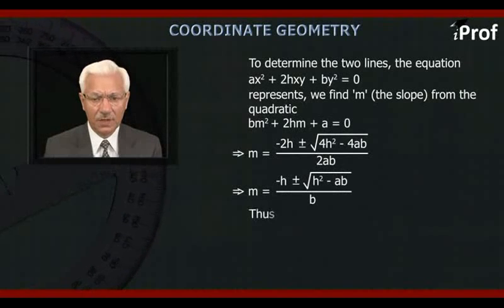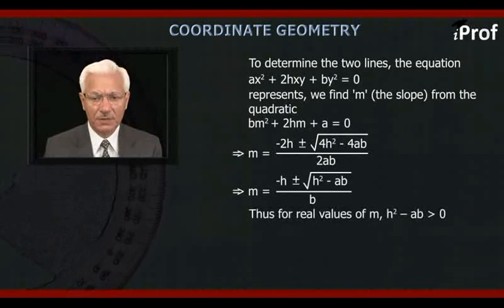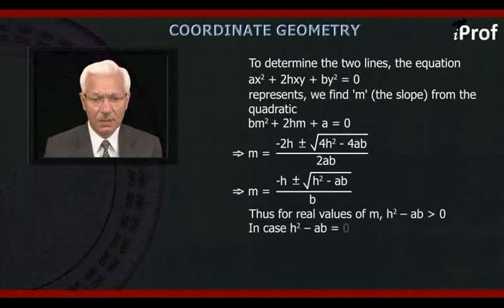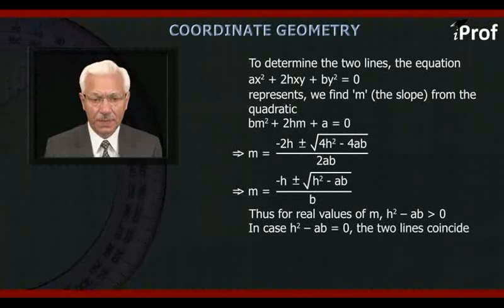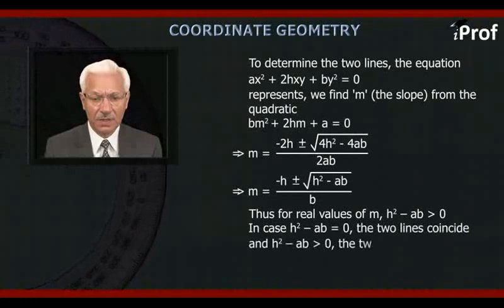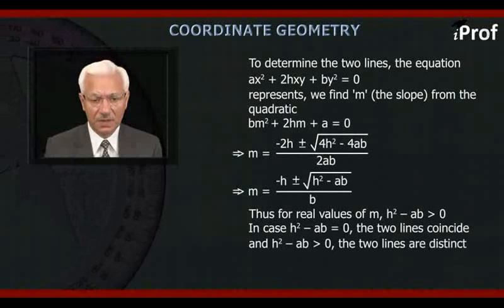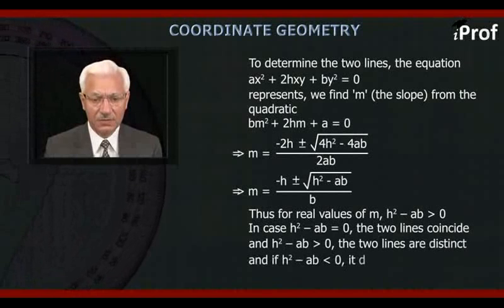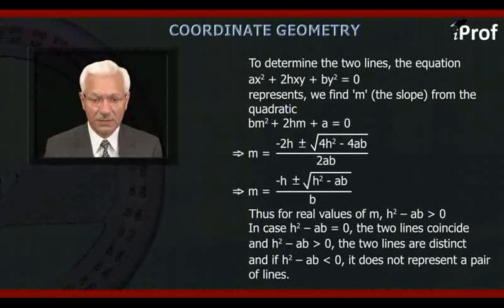For real values of m, h² − ab should be greater than or equal to 0. In case h² − ab = 0, the two lines coincide. If h² − ab > 0, the two lines are distinct and real. And if h² − ab < 0, it does not represent a pair of lines.